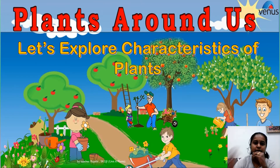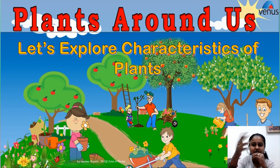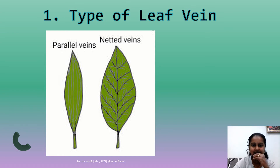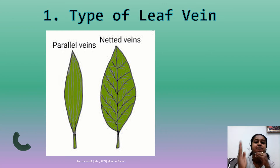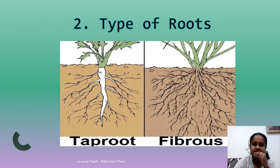Now let's explore the characteristics of plants. Every plant has different characteristics — they are not the same. The first characteristic is the type of leaf vein. There are two types: this one is called parallel veins, and this one is called netted veins. You must remember — there are only two types: either parallel or netted.